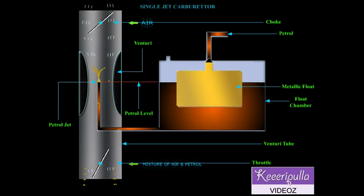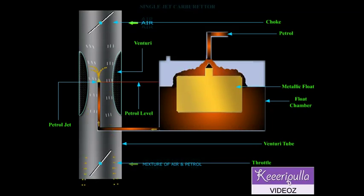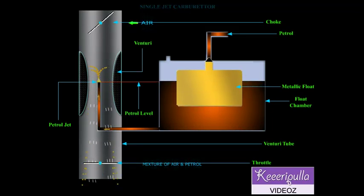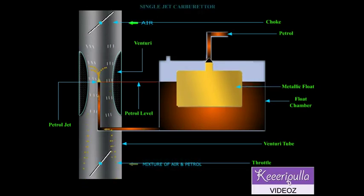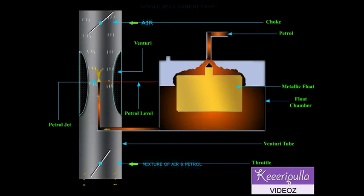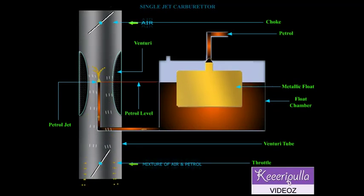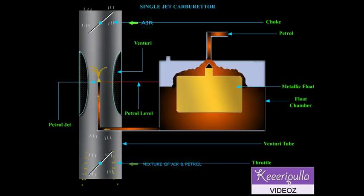Hence, the fuel is drawn from the jet in the form of fine spray into the air stream. This atomized fuel mixes with the air stream and the air fuel mixture is obtained.